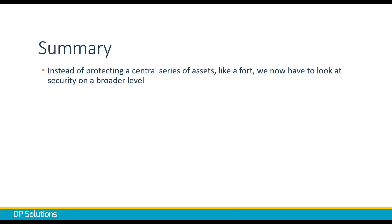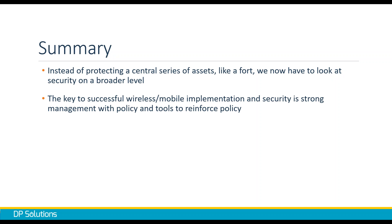In summary: instead of thinking about a central series of assets like a fort, we have to look at security on a broader level. Instead of protecting a bank vault, we protect a mesh of environments. Think of how the government protects a series of airports — they don't focus just on BWI or JFK but look at all airports and how they talk to one another. The key to successful wireless and mobile implementation and security is strong management with policies and tools to reinforce internal policy, making sure devices are patched and have proper security solutions.